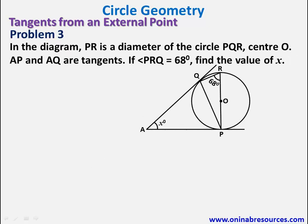We go to problem 3. For problem 3, in the diagram, PR is a diameter of the circle PQR center O. AP and AQ are tangent. If angle PRQ is 68 degrees, we find the value of X.